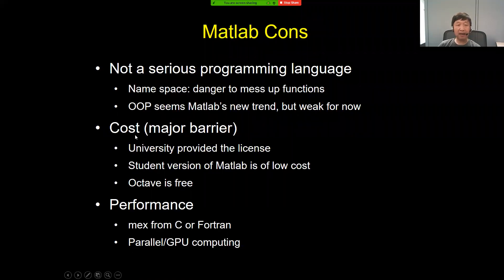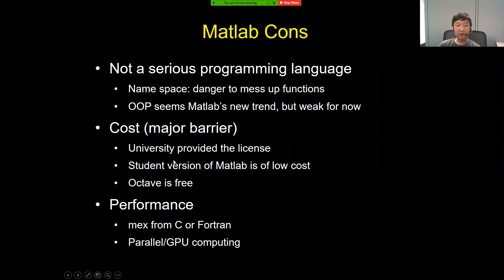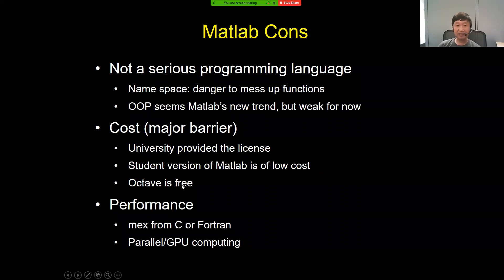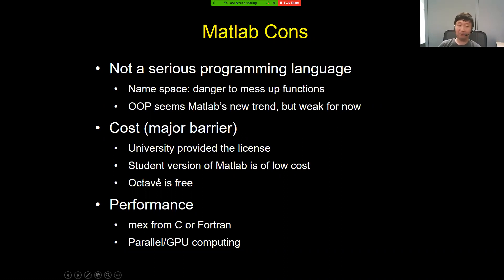The other major problem with MATLAB is cost — it's not free, and it can be very expensive. The good thing is most universities provide a MATLAB license including major common toolboxes. Even if you don't have that access, you can buy a student version for something like $100. But if you really like MATLAB, you can also use Octave as a free alternative. Octave simulates a lot of things in MATLAB, but it's definitely not as powerful, which is why a lot of people are still paying.